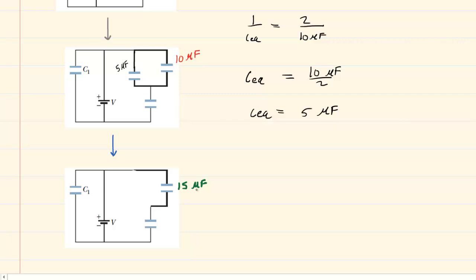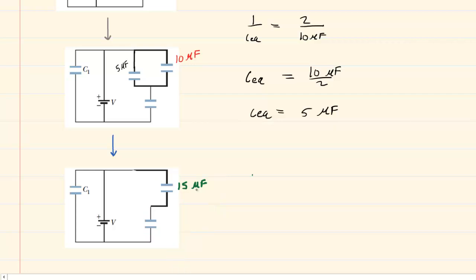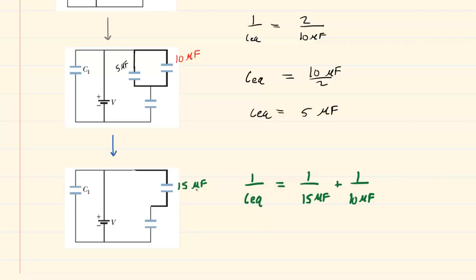We will next note that these two capacitors right here are in series with one another. We use 1 over the equivalent capacitance is equal to 1 over 15 microfarads plus 1 over 10 microfarads. You might want to pick up a calculator and add 1/15 to 1/10. When you do that, you'll get 1/6. So we have 1 over the equivalent capacitance is equal to 1 over 6 microfarads.